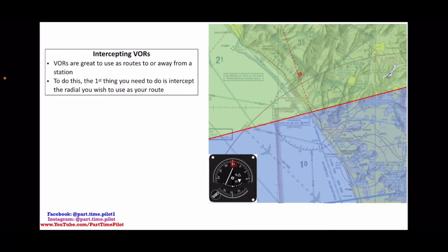So if you know you want to travel along a specific radial on a VOR, but you're not on that radial, how do you track to that VOR and then get on the radial and travel along it? That's called intercepting a VOR, and this is a great way to use as a route.